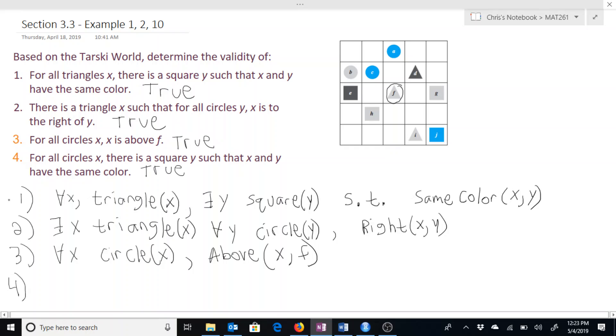And that one written out would be, for all circles x, there is a square y, so there exists y that's a square.